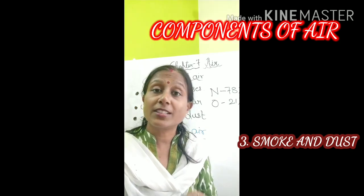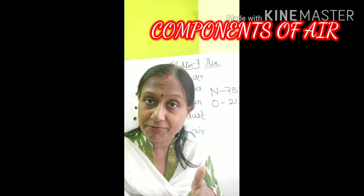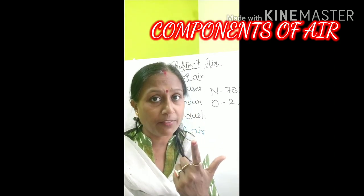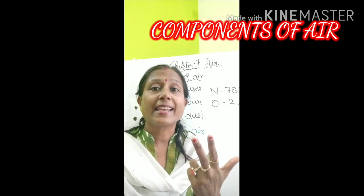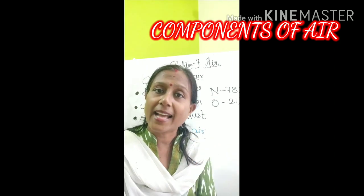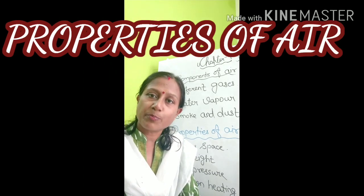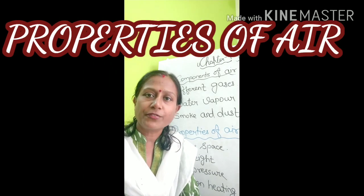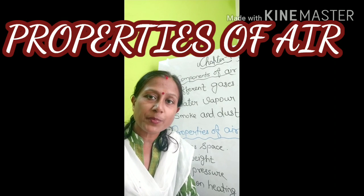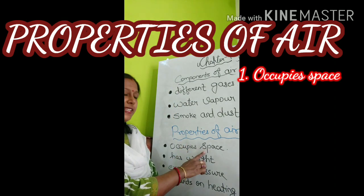So the three major components of air are: air contains different gases, air contains water vapor, and air contains dust and smoke. Now let us discuss the properties of air. The very first property of air is that air occupies space.